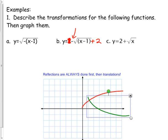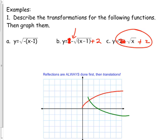This last one is just a normal square root - that's up two, because it's the same as having a plus two at the end. No flip involved.